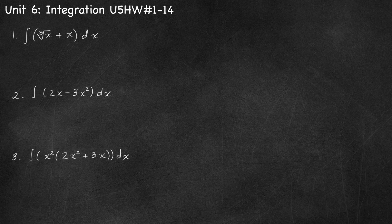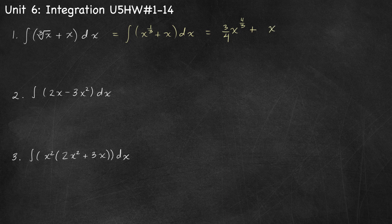Number 1, we want to find the antiderivative of cube root of x plus x. We can rewrite this as x to the power 1/3 plus x. Using the reverse power rule, we add one to the exponent to get x to the 4/3, then divide by 4/3, which is the same as multiplying by 3/4. For x, we increase the exponent by 1 and divide by the new exponent. So we get 3/4 x to the 4/3 plus x squared over 2 plus c.